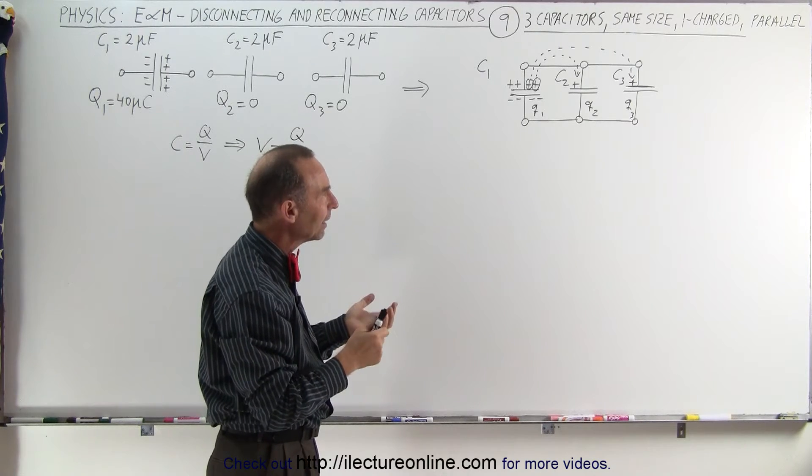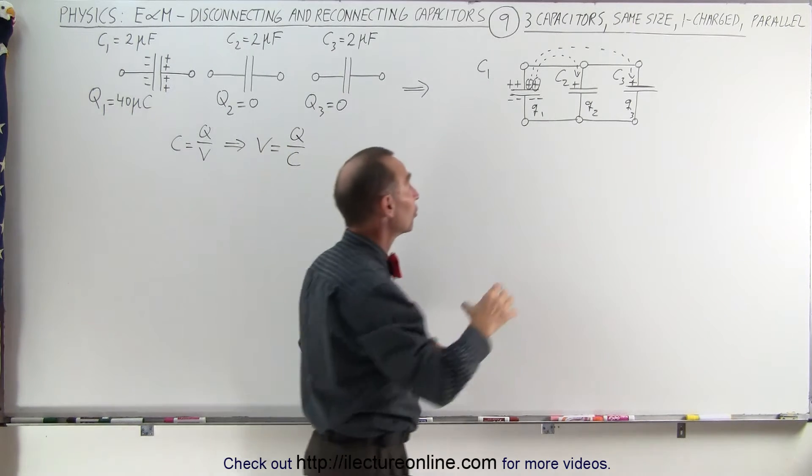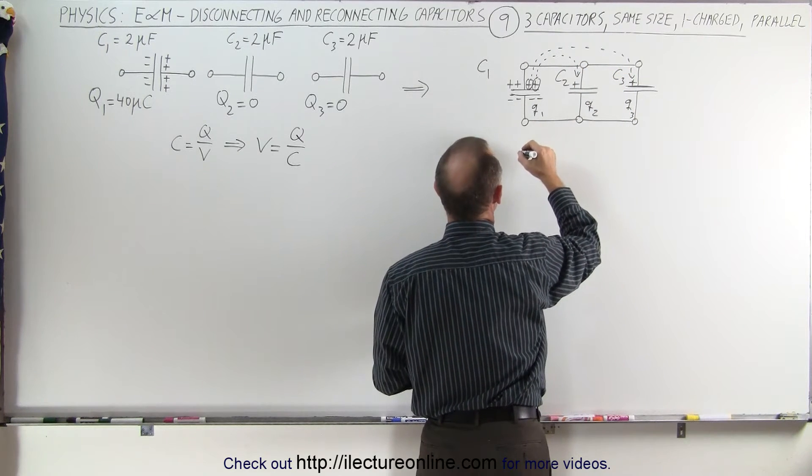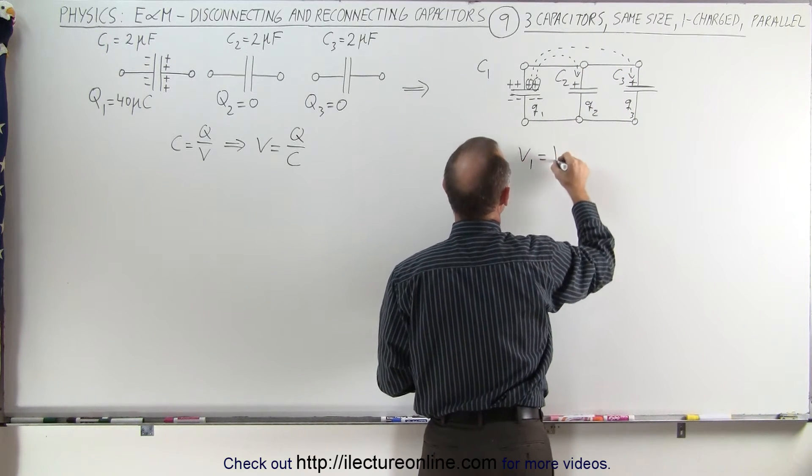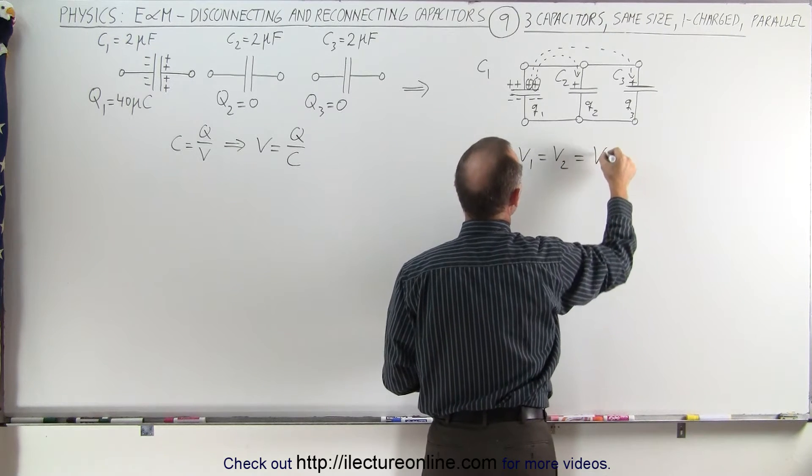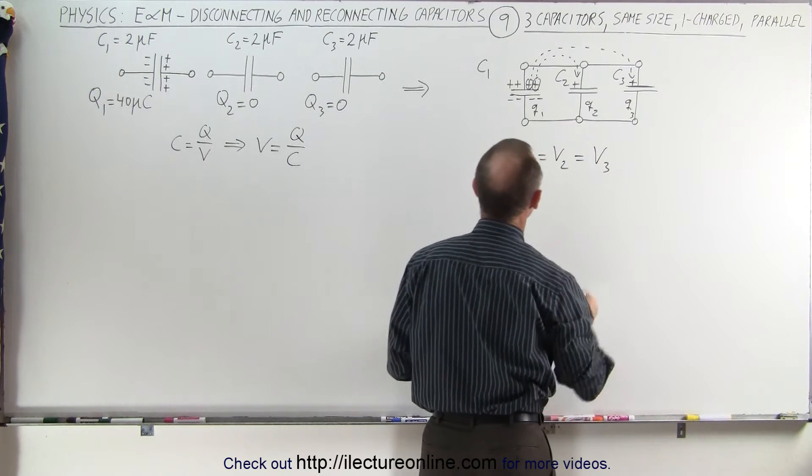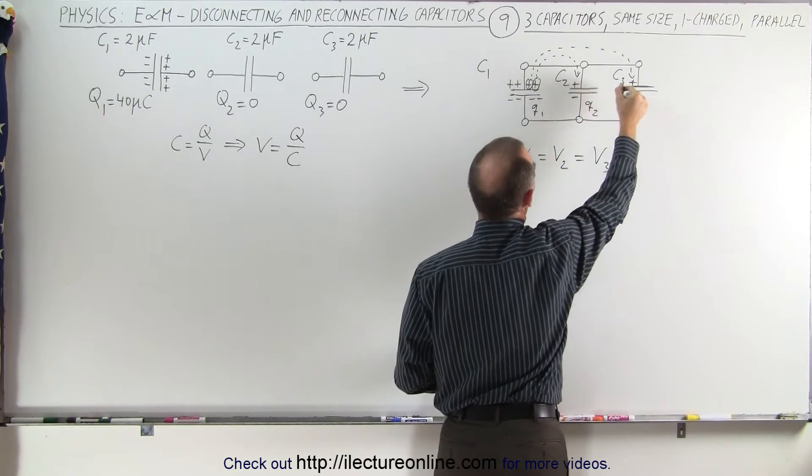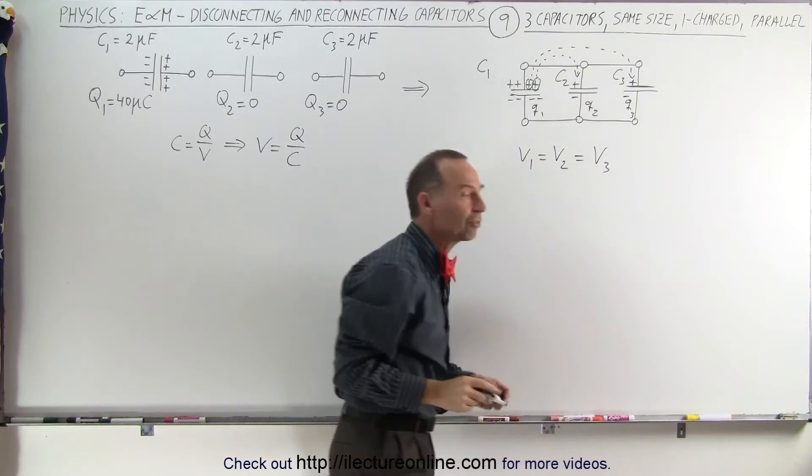The way to do that is to realize that in parallel connections, the voltages are the same on each of the branches, which means that the voltage across one must equal the voltage across two, which must equal the voltage across three. Notice that we have the positive charge at the top and the negative charge at the bottom of each of the three capacitors.